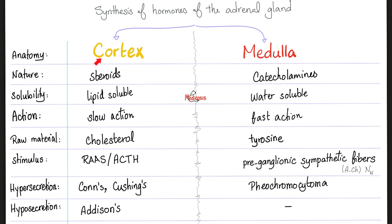Now, adrenal cortex versus adrenal medulla: the cortex secretes steroids, which are lipid hormones, while the medulla secretes catecholamines, which are water-soluble hormones. Lipid hormones are slow in action because they must diffuse through the lipid bilayer cell membrane and reach receptors deep in the cytoplasm or nucleus. The medulla acts very fast because its receptors are waiting on the membrane surface — cell membrane surface receptors.